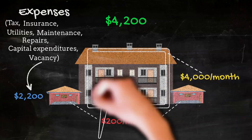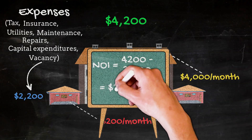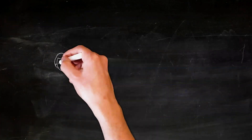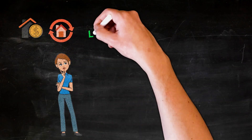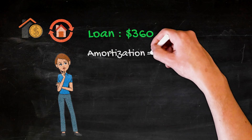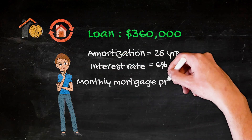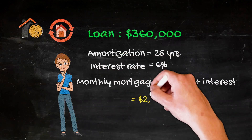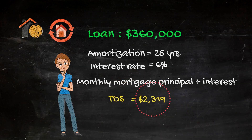— and vacancy combined come to approximately $2,200 per month. To figure out the NOI, we would subtract $2,200 from $4,200, resulting in $2,000 per month. Let's say you're looking to finance or refinance this property and need a $360,000 loan. At a 25-year amortization and a 6% interest rate, your monthly mortgage principal and interest would come to $2,319. This would be your TDS in this example.